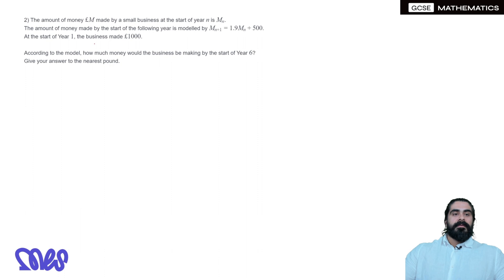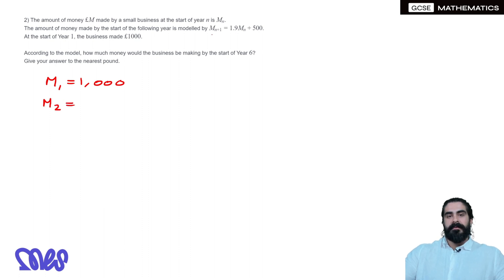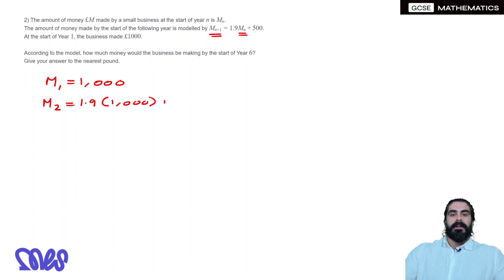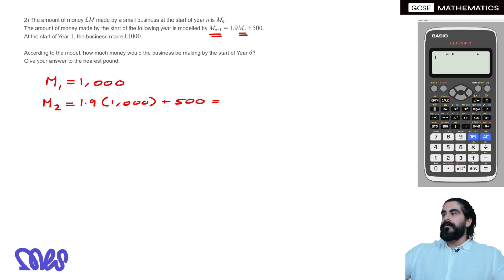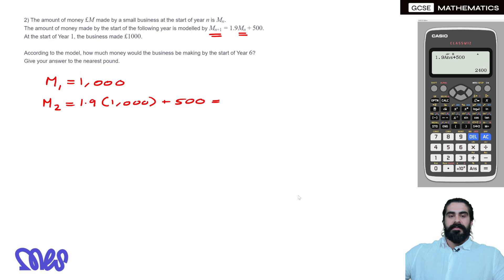So at the start of year 1 they're making £1000. At the start of year 2, remember what the formula means: to find the next term we're doing 1.9 times the previous term, plus 500. So we're doing 1.9 times 1000, plus 500. We type 1000 into the calculator, then use the answer button: 1.9 times the answer plus 500, which gives us 2400.